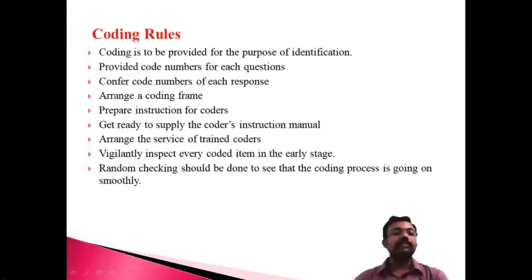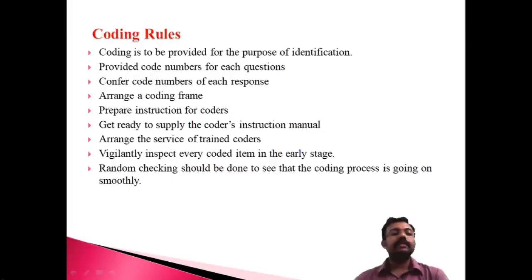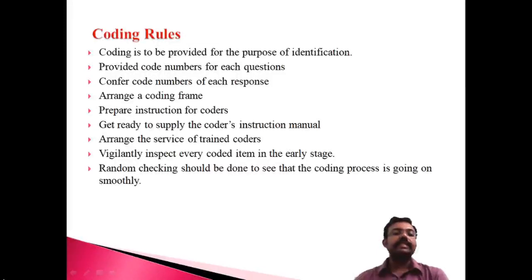The fifth rule is to provide instructions for the coders — if coding is done by separate persons, proper instructions must be given to them. The sixth rule is to supply a coding instruction manual. The seventh rule is to arrange training services for coders, because good coding requires trained coders. The eighth rule is to vigilantly inspect every coded item in the early stage.